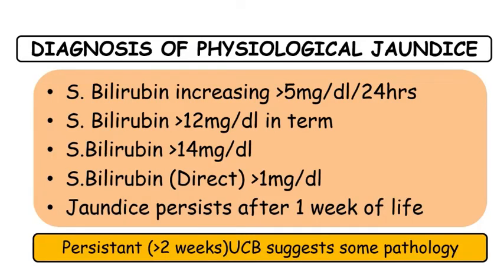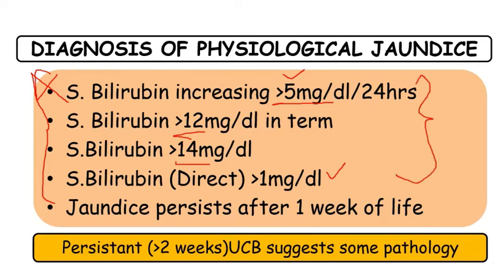How do we diagnose physiological jaundice? We have to rule out the following things — if any of these are present, it is moving towards pathological jaundice: serum bilirubin rising more than 5 mg per dl per day; serum bilirubin in term babies more than 12 mg per dl or in preterm more than 14 mg per dl; direct (conjugated) bilirubin more than 1 mg per dl; or persistence of unconjugated bilirubin for more than 2 weeks — all suggest pathology.